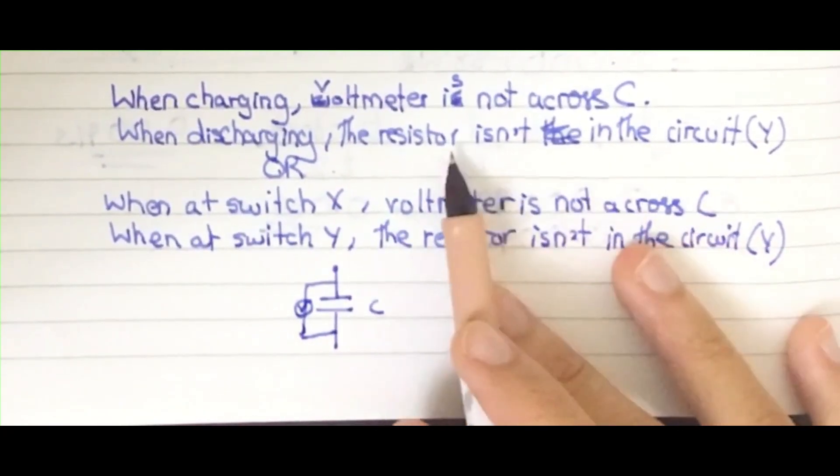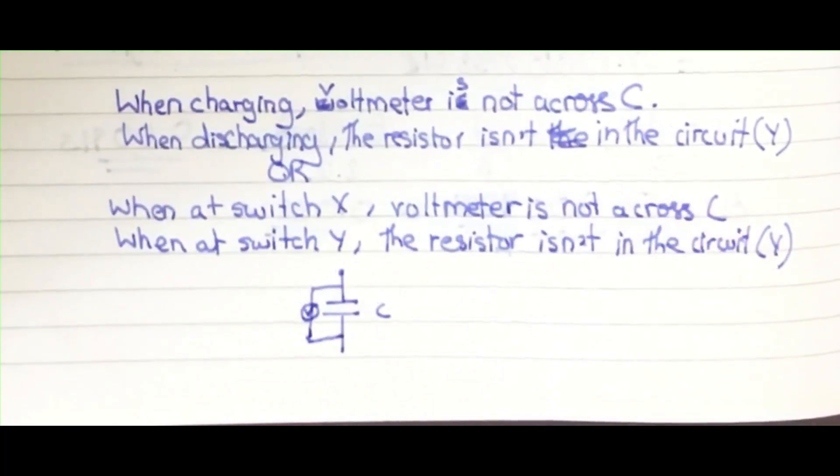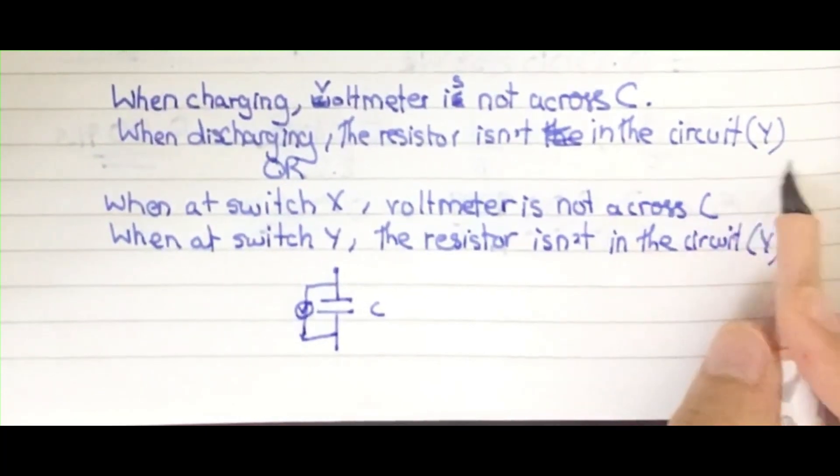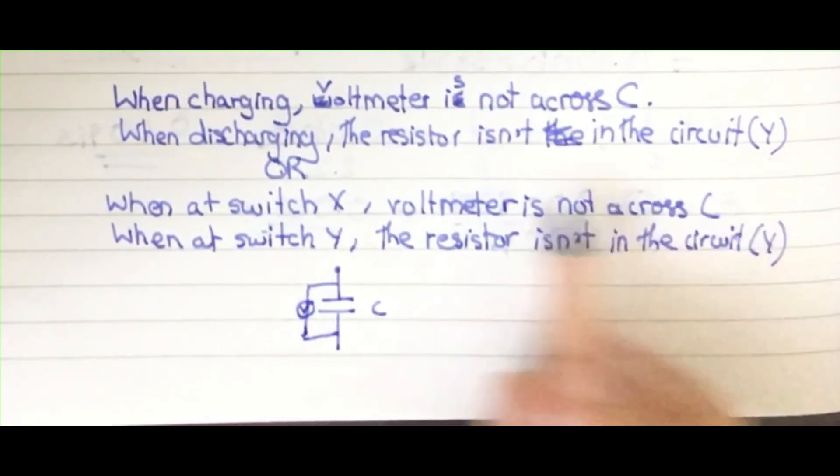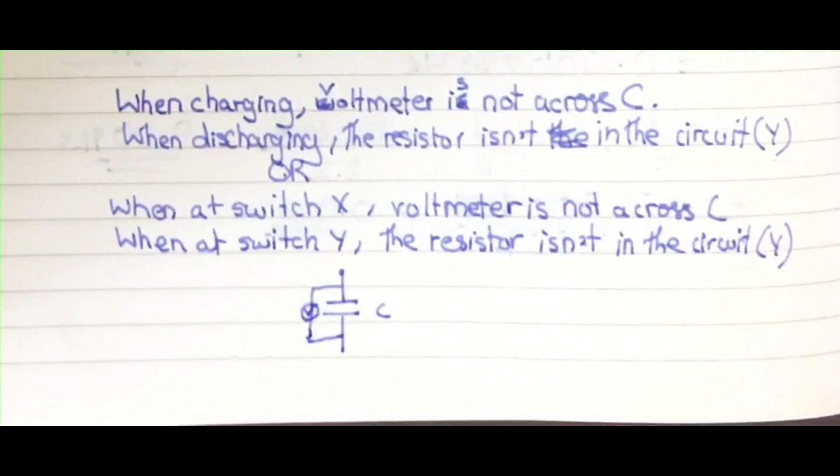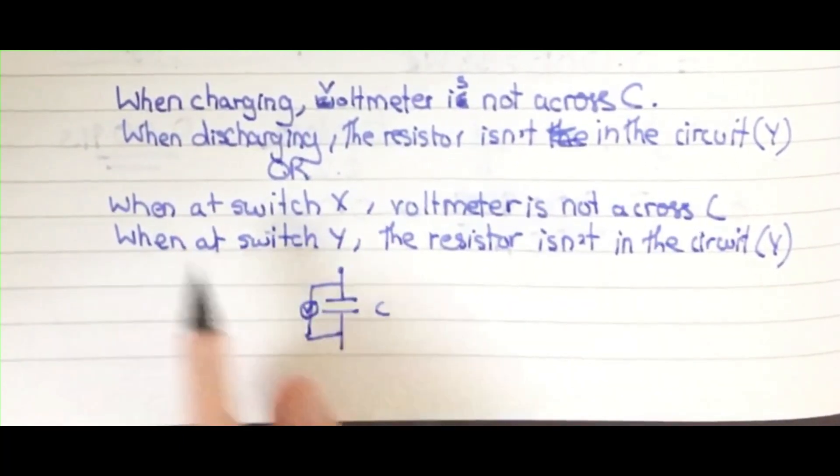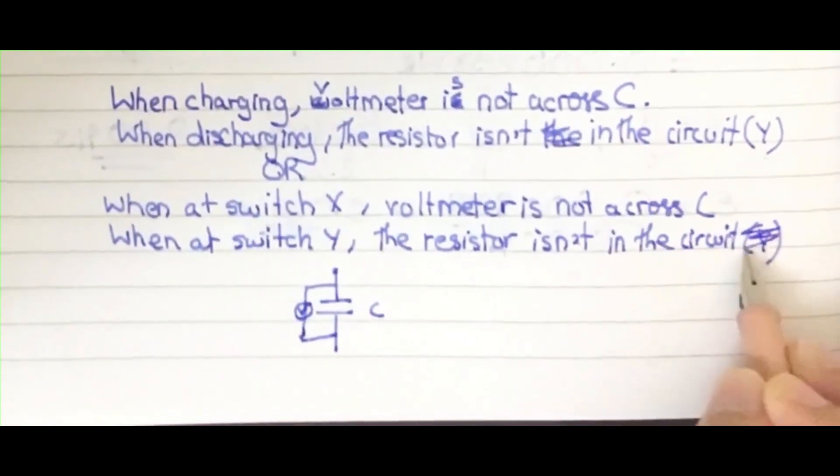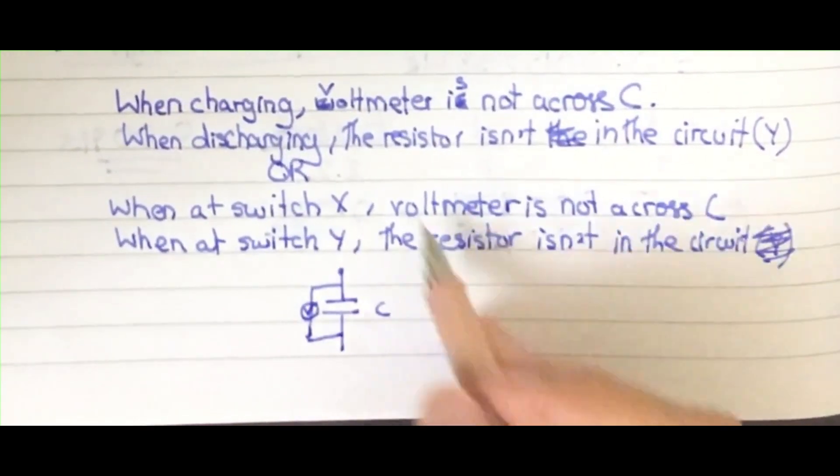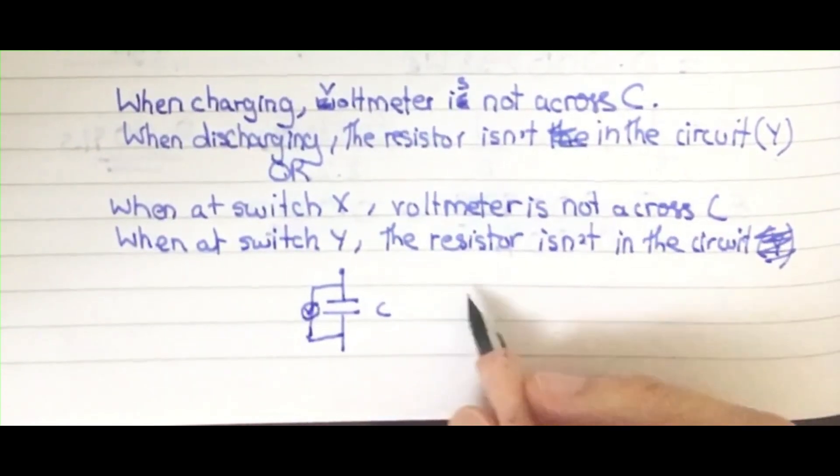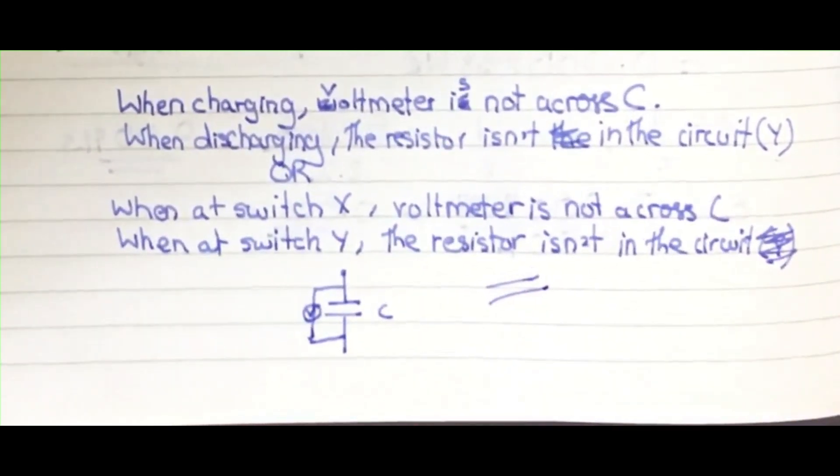And when discharging, the resistor isn't in the circuit. The resistor is in the Y place, the Y circuit, and we can see it isn't there—it's in the X one. Or you can say it by their names or just define them. It's both correct either way. So here is your answer.